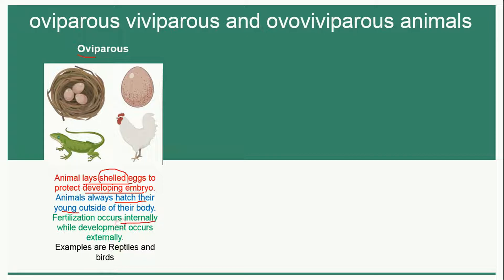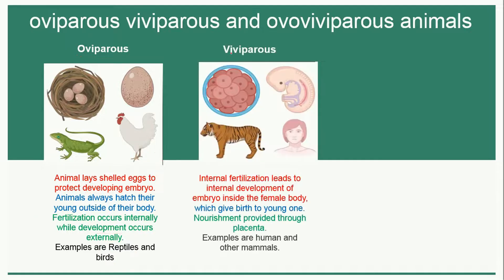The fertilization is internal, however the development is external. Male and female gametes fuse together by the process of fertilization inside the body, and after that the egg is released out of the body, where the embryo develops into a young one. Examples of oviparous animals include reptiles such as lizards and birds such as hens.